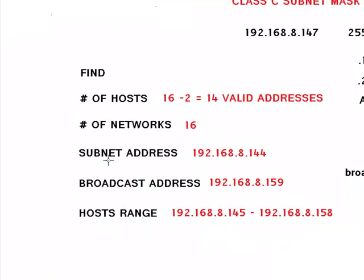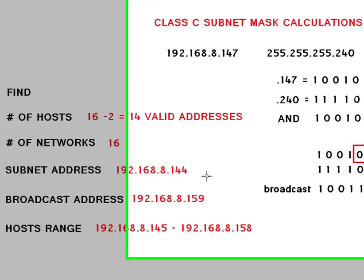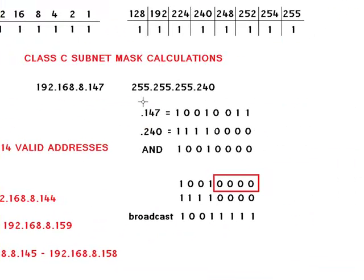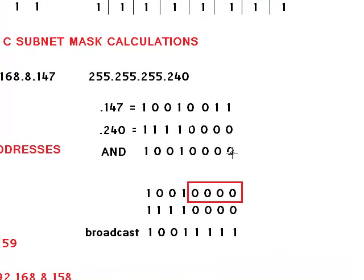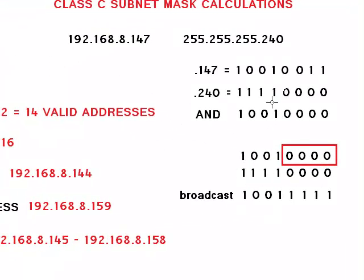To calculate our subnet address we need to do an AND operation between our IP address and our mask. When doing an AND operation, every time you have two ones the result is a 1. If there is a 0 the result is always a 0. When we do the AND operation this is our result, which converted to decimal gives us an address of 144.